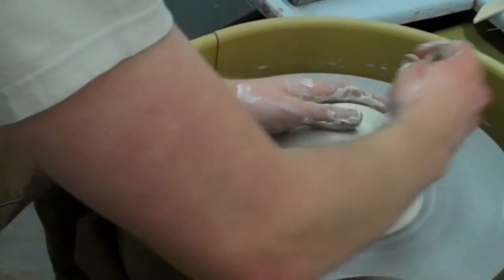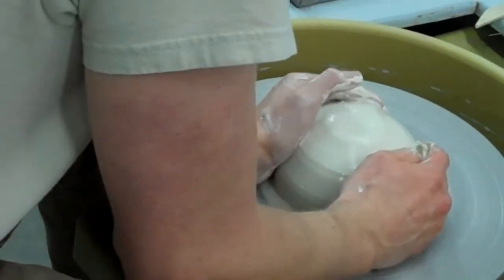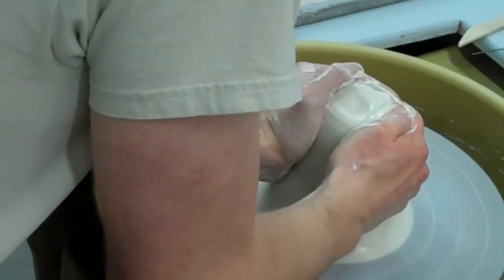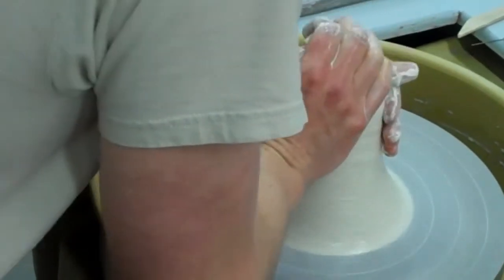This is just like wedging. Doing this up and down will get rid of air bubbles. It will also blend the clay together to make it a nice even consistency.